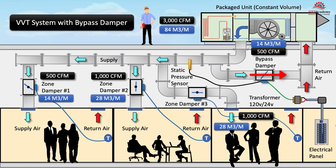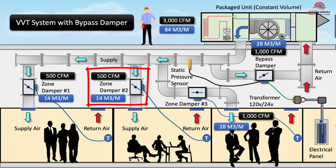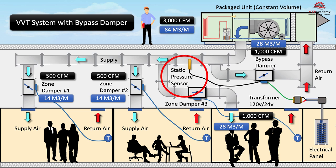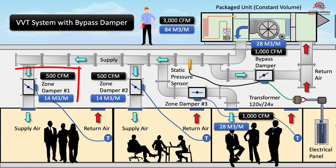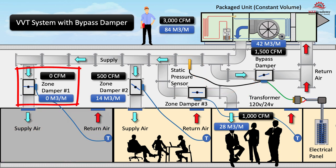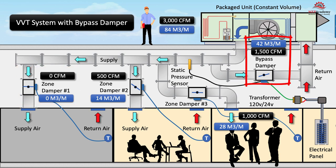If zone damper number two also reduces the amount of air delivered to the space by the same amount, the duct pressure would increase further and the static pressure sensor would send a signal to the bypass damper to open further. Then, if zone damper number one closes completely as the occupants have left the space, the bypass damper will have to bypass all the air that would have gone to that zone.